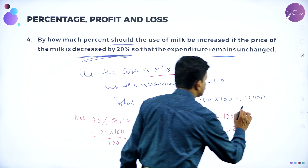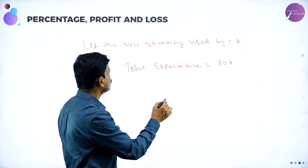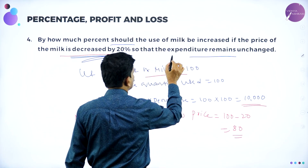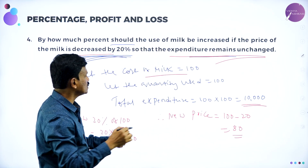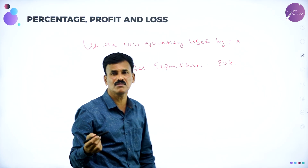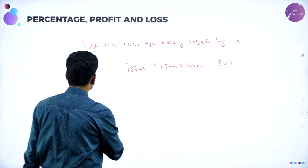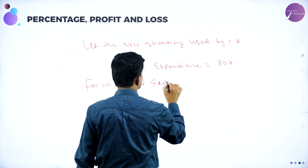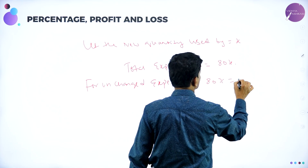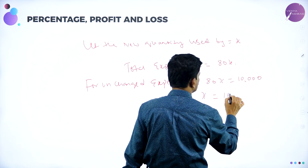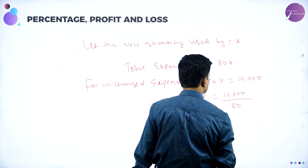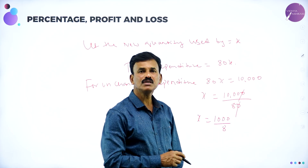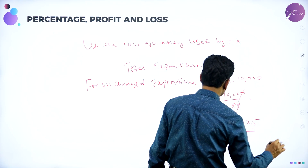For unchanged expenditure, 80x must equal 10,000. Therefore x equals 10,000 divided by 80, which simplifies to 1,000 divided by 8, equal to 125. So the new quantity is 125.